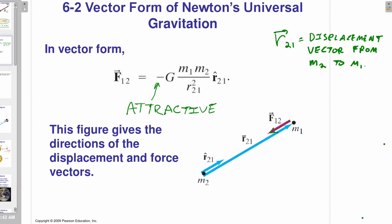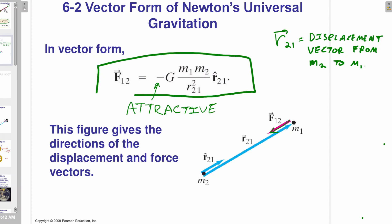So here is what Newton's law of universal gravitation looks like in its vector form — this is probably the best way to remember it. The force on mass one by mass two is going to be minus G M1 M2 over the distance between them squared, and the direction is going to point in the minus R21-hat direction. By way of notation, R21 is the displacement vector pointing from M2 to M1.